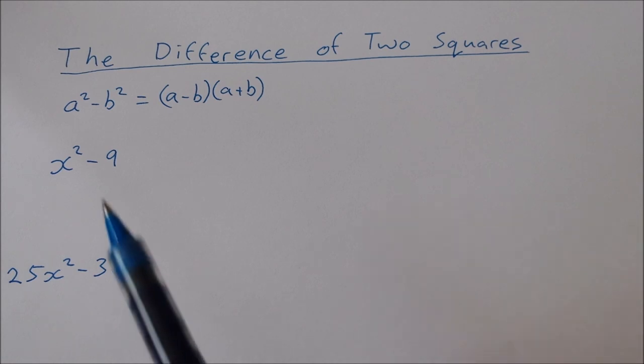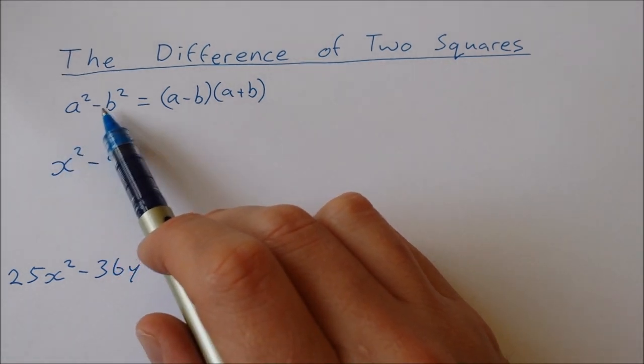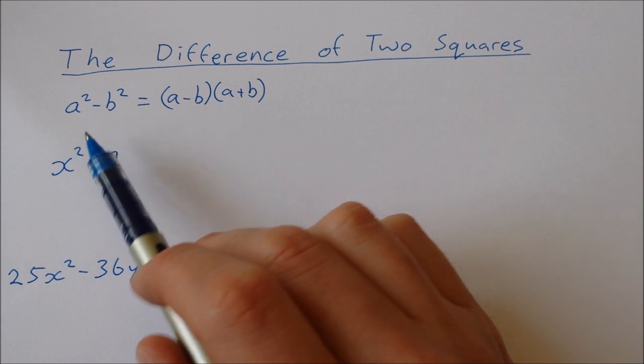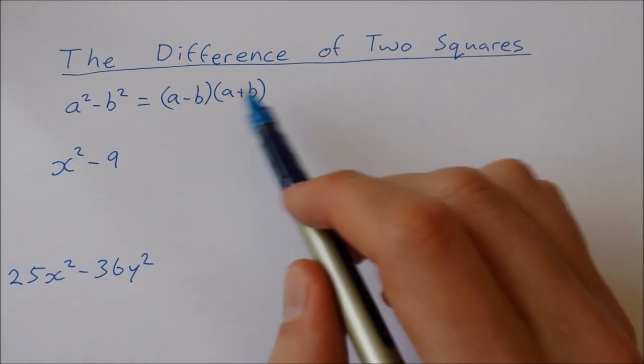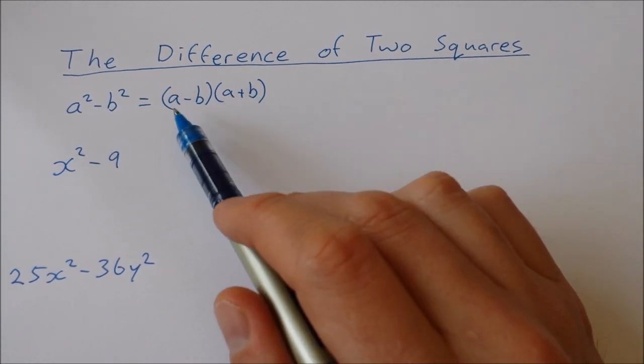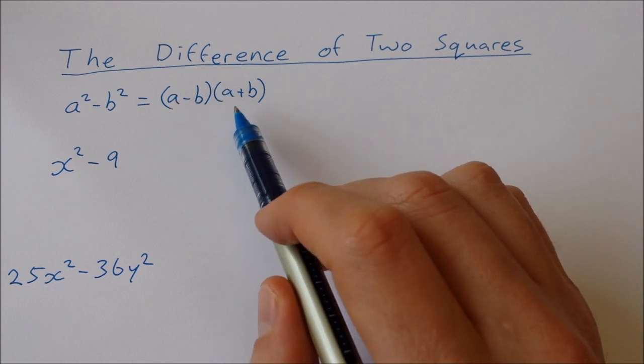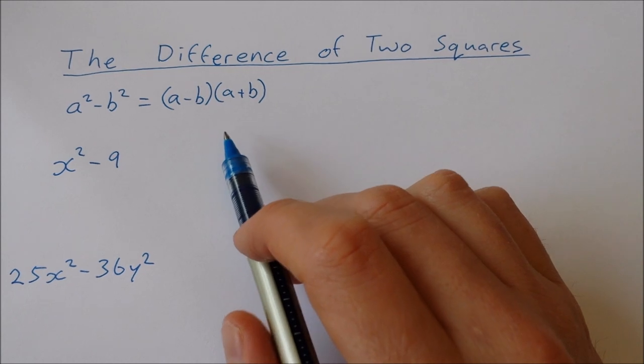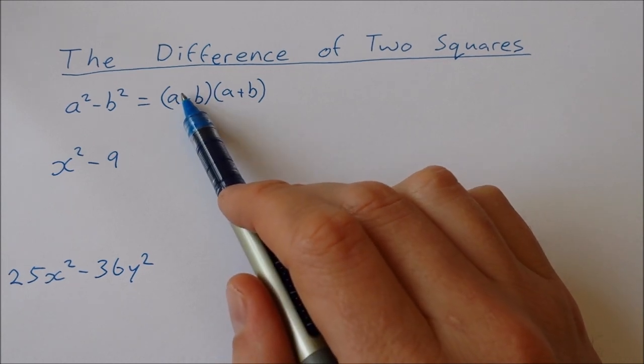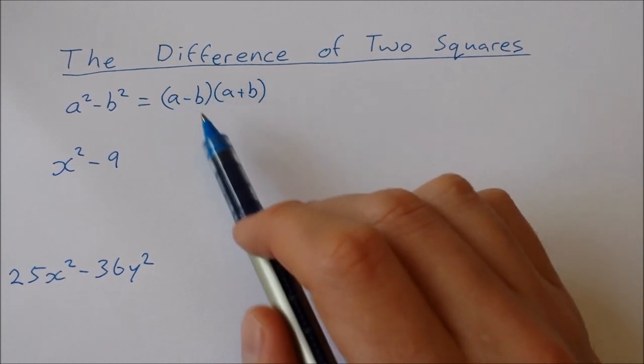Now the difference of two squares is when you have one number squared minus another number squared. And to factorize this, what you do is you have two sets of brackets. In the first set you have the first number minus the second number, and in the second bracket you have the first number plus the second number. And notice that there's no squares in either of these brackets now.